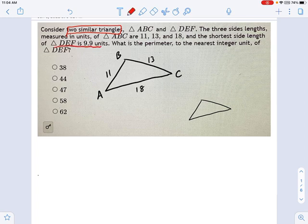And DEF has a short side of 9.9. So instead of 11, it's 9.9. And it wants to know what's the perimeter to the nearest integer unit of DEF. So here's my letters. I just want to know what the perimeter of this thing is.